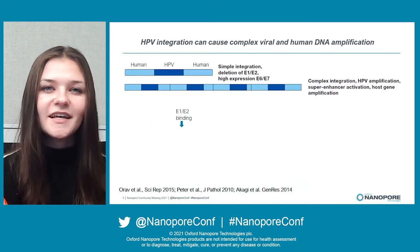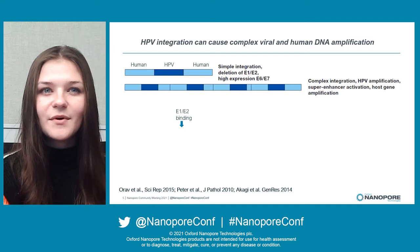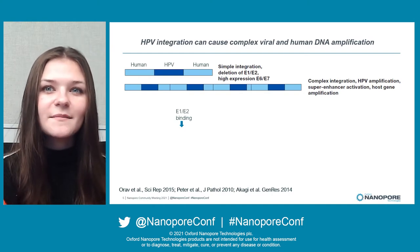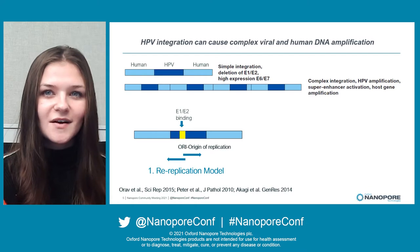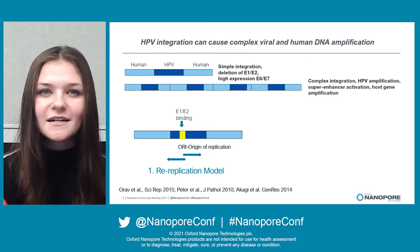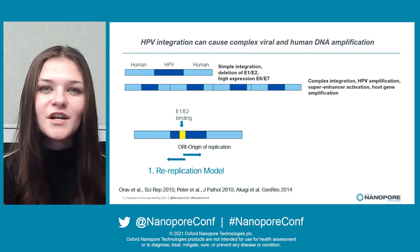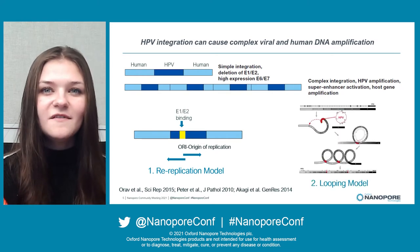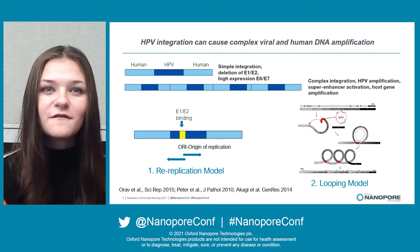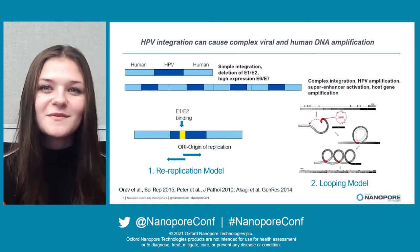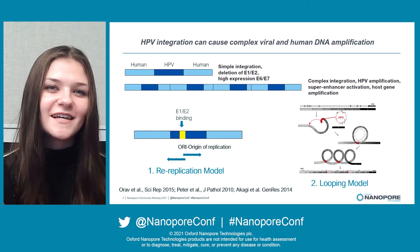HPV integrations can take many forms. They can be simple and result in a single integration with flanking human DNA. However, many times HPV integrations can be complex. There are often multiple copies of HPV and flanking DNA generated during the integration process that are not resolved by short-read technology. A proposed mechanism of HPV integration involves the amplification of HPV and flanking human DNA resulting in a looping structure. Therefore, we can use nanopore long-read whole genome sequencing technology to investigate these events.